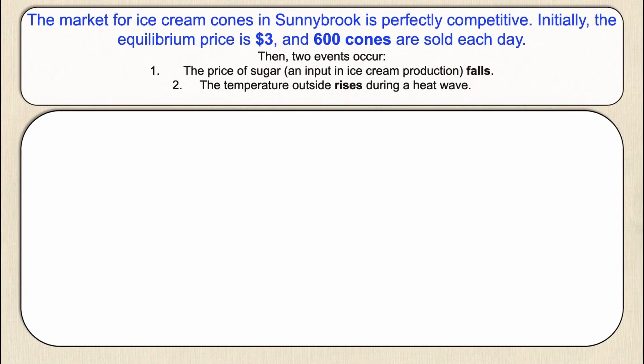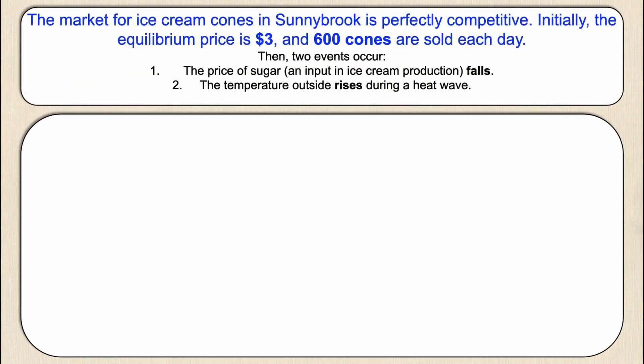In front of us we've got a question which says that the market price for ice cream cones in Sunnybrook is perfectly competitive and initially the equilibrium price is $3 and that 600 cones are sold each day. We're then told that two events occur: one, the price of sugar which is an input in the ice cream production falls, and the second event is that the temperature outside rises during a heat wave. We're tasked with graphing what happens to the supply and demand from the original equilibrium to the new equilibrium. Let's start with our original equilibrium.